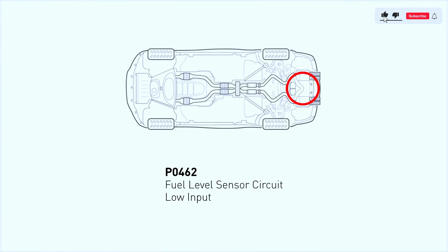What does the P0462 code mean? Diagnostic trouble code DTC P0462 stands for fuel level sensor circuit low. The PCM stores this code when it detects an irrational input signal from the fuel level sensor, or FLS.